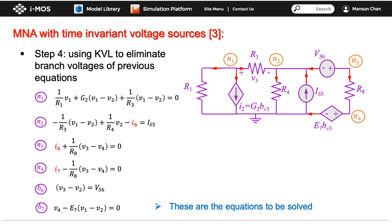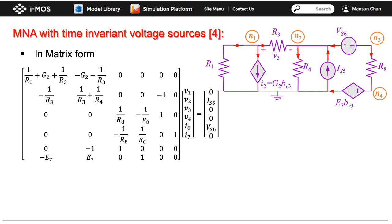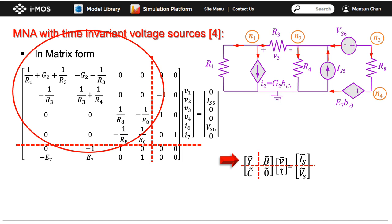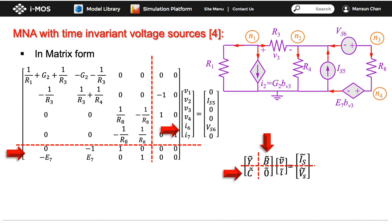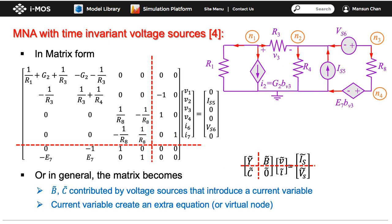A new step is added to include constraints on the branch voltages, adding two new equations for branches whose current and voltage cannot be expressed in terms of each other. We continue using KVL to replace branch voltages with node voltages, collect unknowns, and write the system in matrix form. The resulting matrix can be divided into parts: the first rows and columns concern the node equations as before, and each unknown current introduces one additional variable and equation, expanding the matrix. Fortunately, the location and values of these new entries are easy to identify and a template (stamp) can be constructed for each element type.